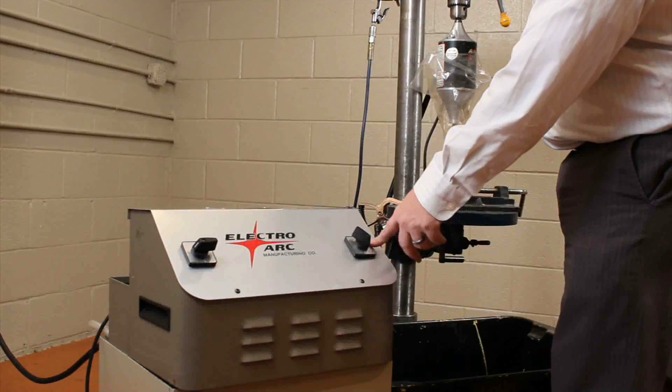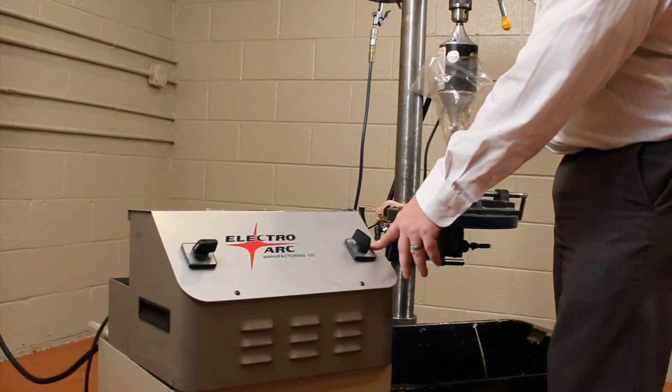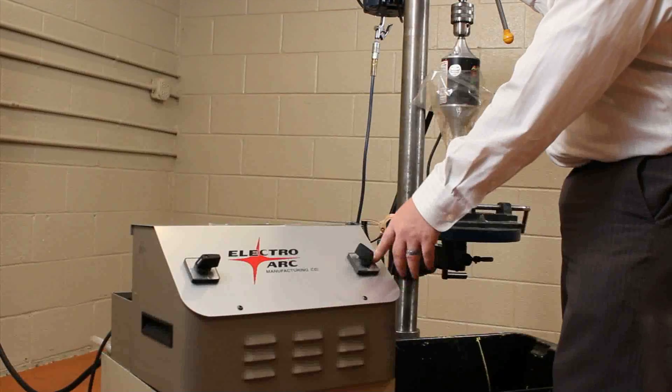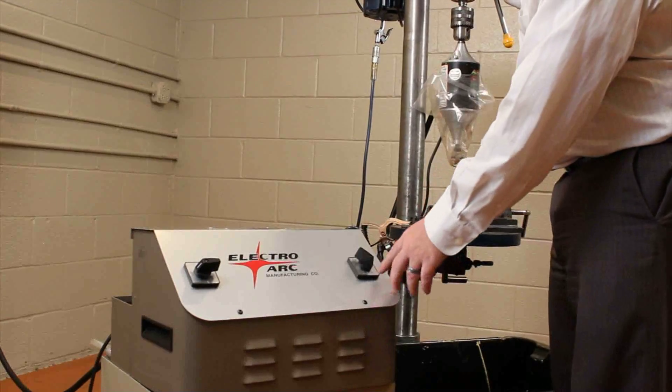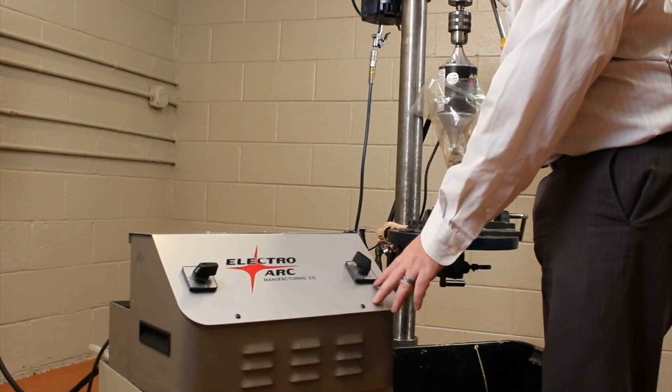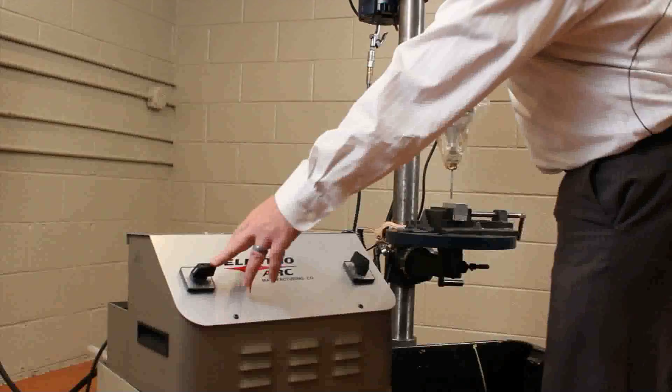We just have our heat selector knob right here. All of our machines will come with a chart that will tell you exactly which heat setting to use for each broken tap or drill, whatever you may be trying to take out. So all we'll need to do is switch on power.